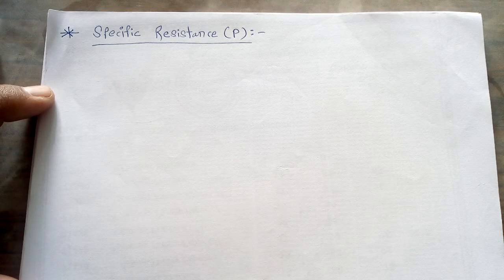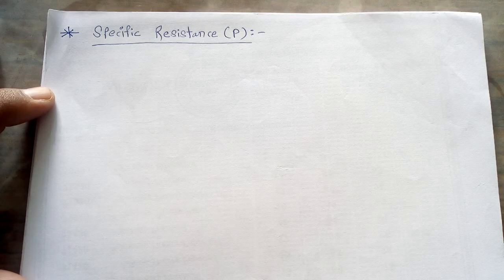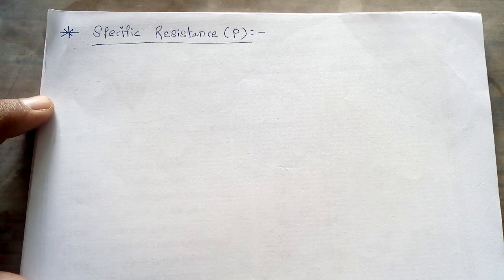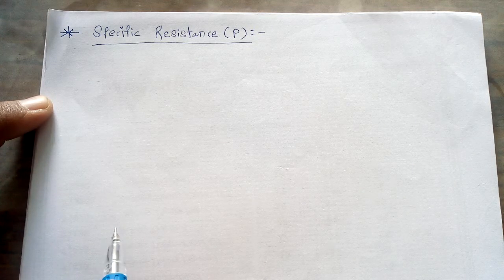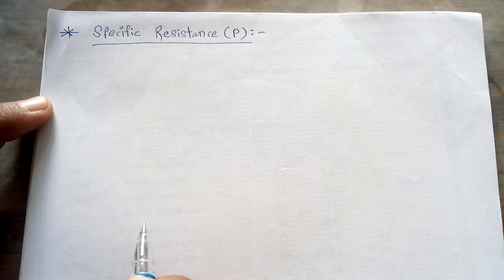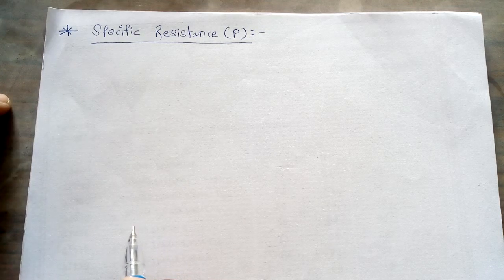Very good morning to all of you. I once again welcome you all to this current lecture. As we know, in the last lecture we started the new chapter from the syllabus — electrolytic conductance. In that chapter we studied the introductory part: what is known by electrolyte, non-electrolyte, strong electrolyte, weak electrolyte, and Ohm's law. After that, we studied the different types of conduction phenomena — electrolytic and metallic conduction, the two types of conductors — and finally the electrolytic conduction phenomena.